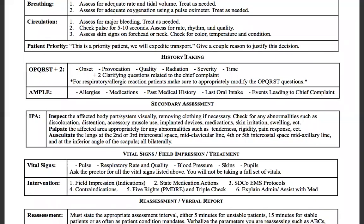Now we go down to history taking. Since they were alert and oriented times three, we can do a chief complaint-based history. So we go through our OPQRST questions. Onset, provocation, quality, radiation, severity, and time. You have to memorize the questions — it is what it is.